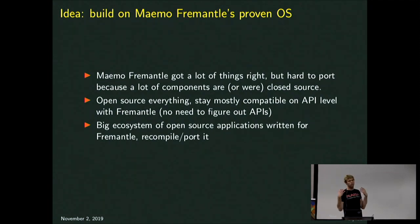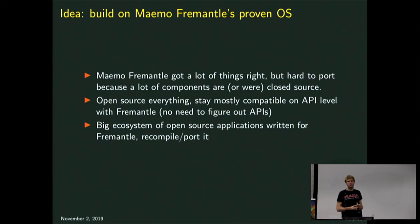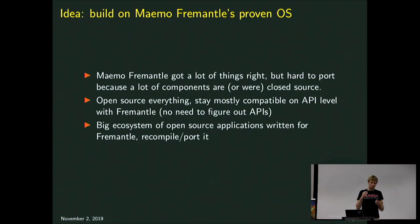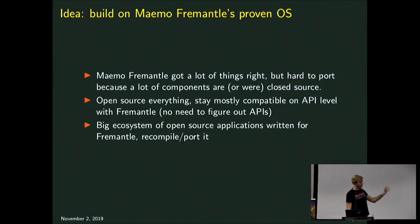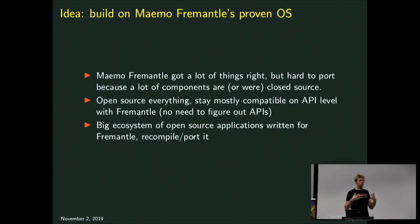The idea is that Maemo Fremantle was a successful operating system. A lot of the APIs are just fine. There's a big set of applications that people built around Fremantle ten years ago, and some of them still work — map applications, public transport applications, applications to learn languages. We just need to take that source code, recompile it, and it will work on Maemo Leste. So the idea is: take whatever is open and port it, whatever is closed — rewrite it — and keep the APIs the same so we can leverage all the other applications that people wrote and bring them to Maemo Leste.